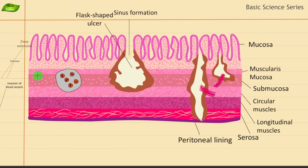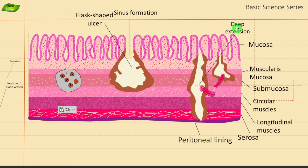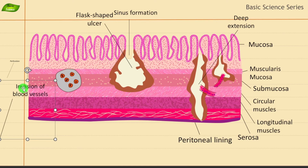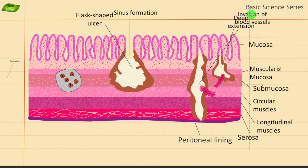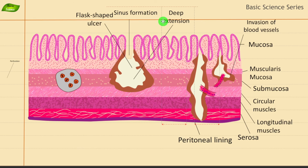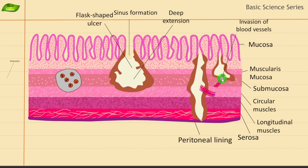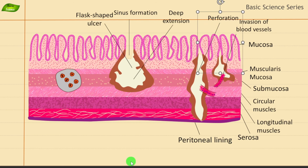Moving on to perforation — I have to also mention there is a deep lesion that can occur. When the extension is too deep, it is really damaging to the host. Another thing that can happen is invasion of the blood vessels, which I'm highlighting here. I have to move the deep extension label so they don't overlap. Invasion of the blood vessels can make things really complicated — extra-intestinal amoebiasis can occur, which is again very dangerous.